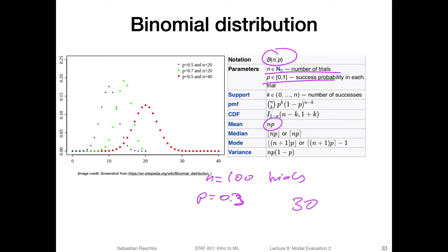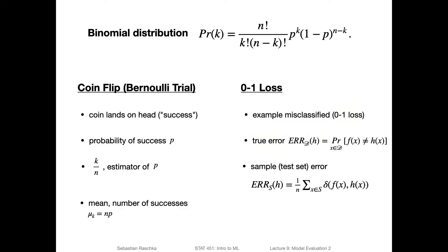On the left-hand side, this is showing us how the binomial distribution looks for different values of p and n — I just took this from Wikipedia. It gives us the probability density function for the different number of successes. One more thing: the variance is n times p times one minus p, because we will be using that also.